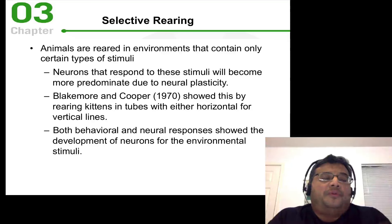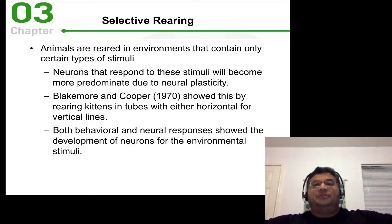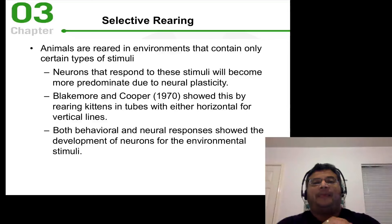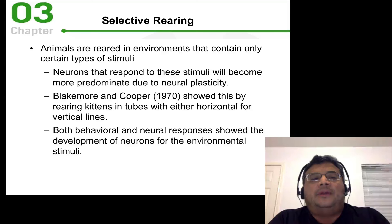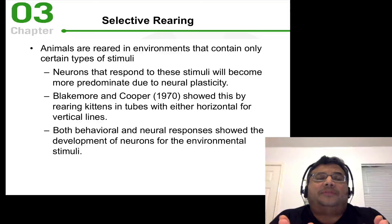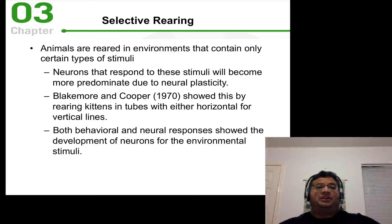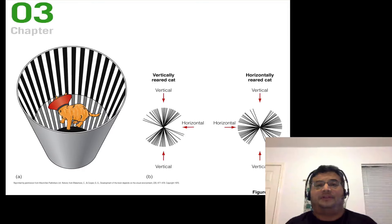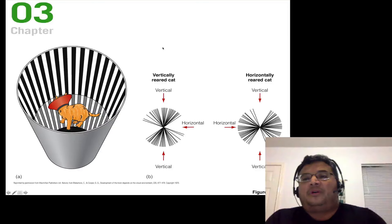Blakemore and Cooper did a groundbreaking study where they raised kittens in large tubes that had either horizontal or vertical lines. They noted that the kittens responded very differently to the type of lines they were reared in. A kitten raised in a horizontal environment was able to perceive horizontal lines but didn't do a good job perceiving vertical lines.